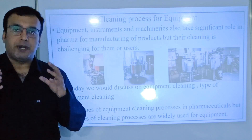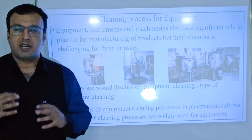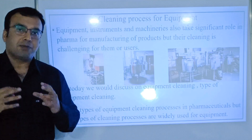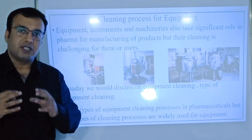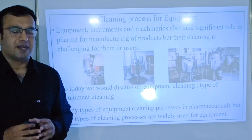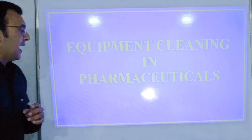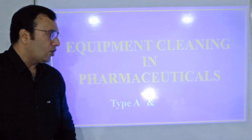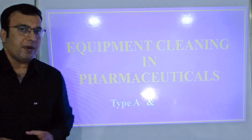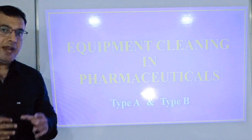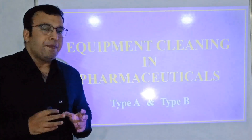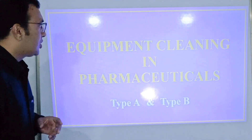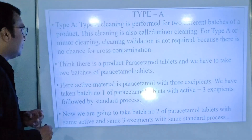There are many types of equipment cleaning processes and procedures in pharmaceuticals, but two types are widely used for equipment. They are Type A and Type B. So what is Type A and what is Type B, and when should each be performed?